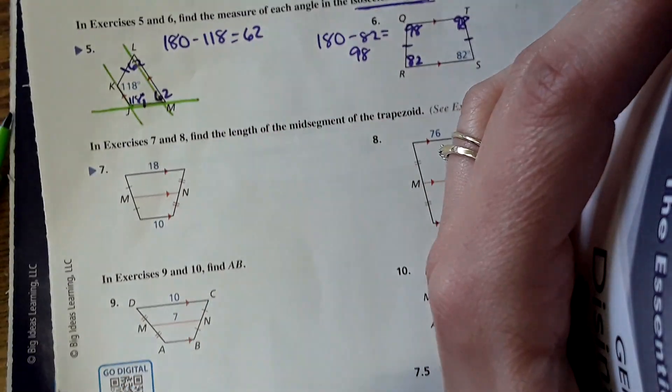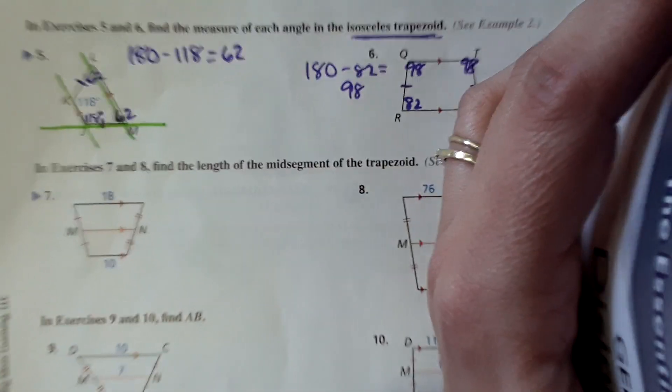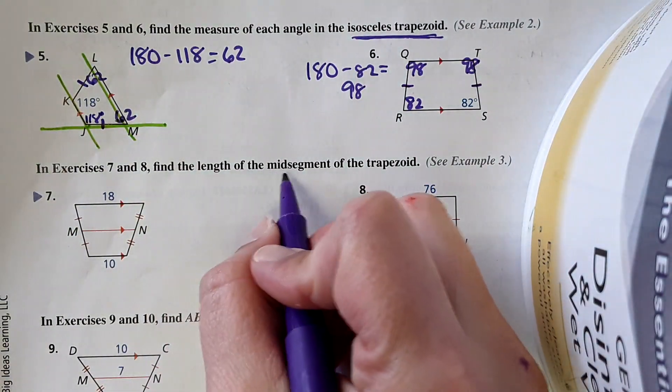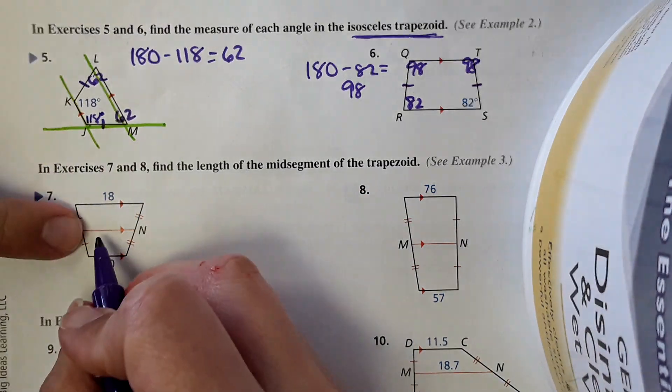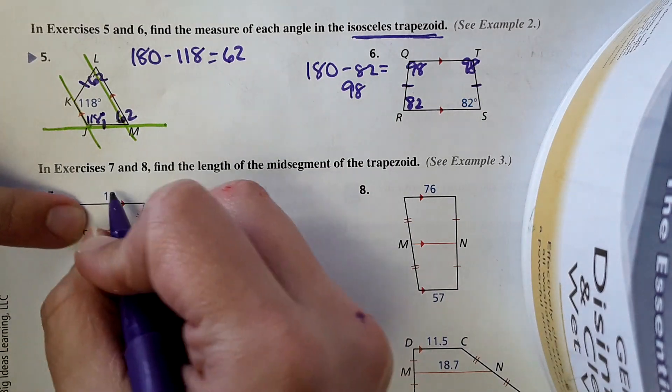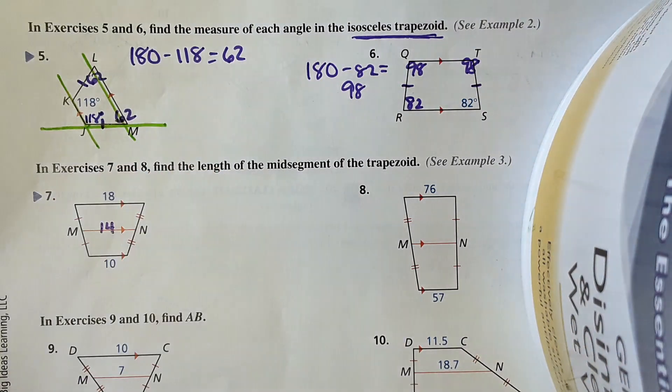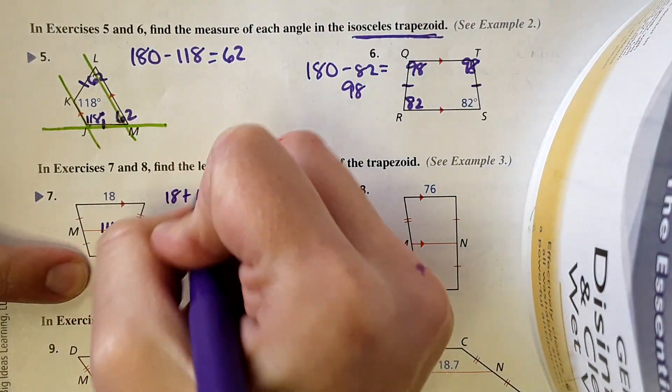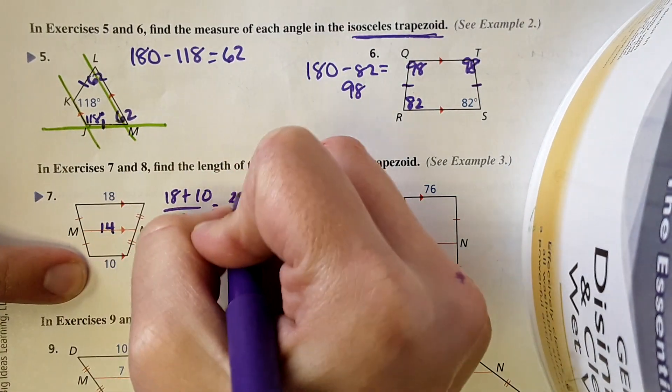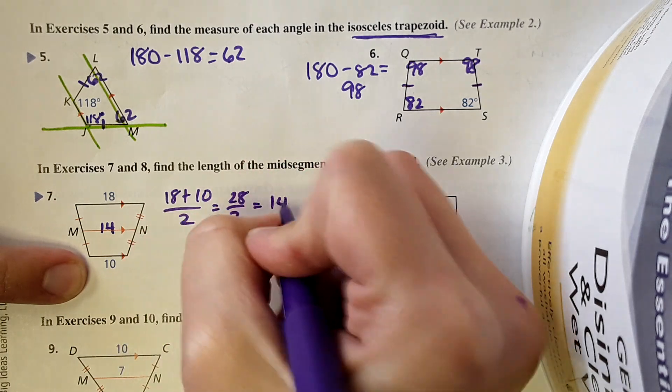Okay, next. So now it brings in the mid-segment. Find the length of the mid-segment of the trapezoid. You could use the equation, or if you can easily see the middle of 10 and 18, which would be 14, that's going to be that length there. If you're more of an equation type person, you can just add 18 plus 10 divided by 2. You'll get 28 divided by 2, which is 14, and there is your answer there.